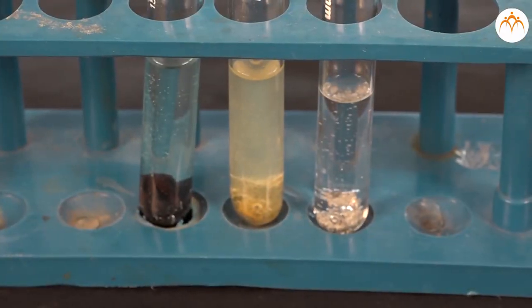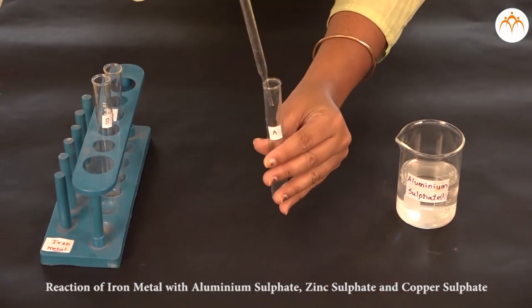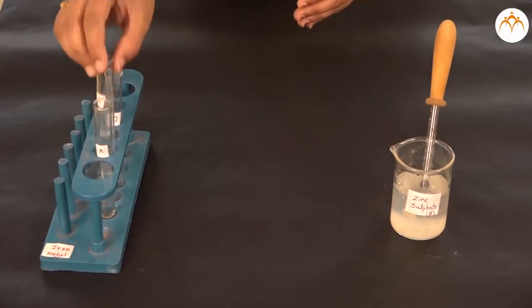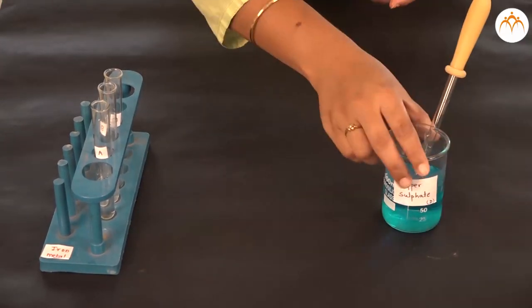Observe the changes. Take copper filings and add to aluminum sulfate, zinc sulfate, and ferrous sulfate solutions. Observe the changes.